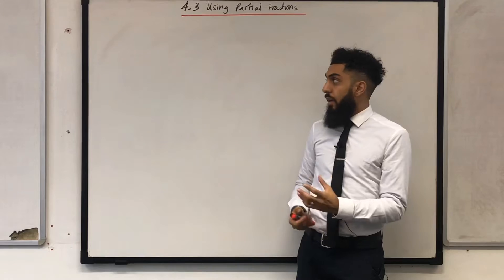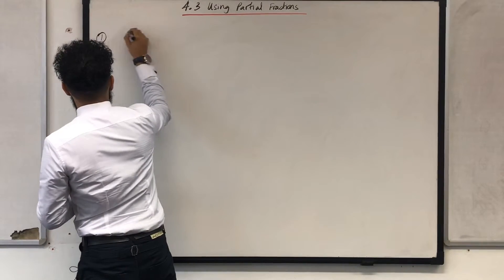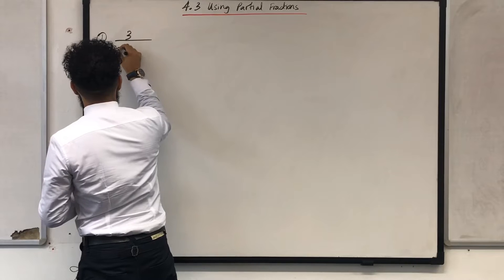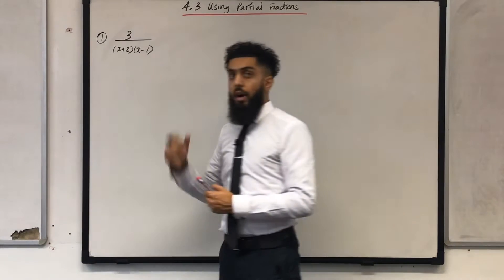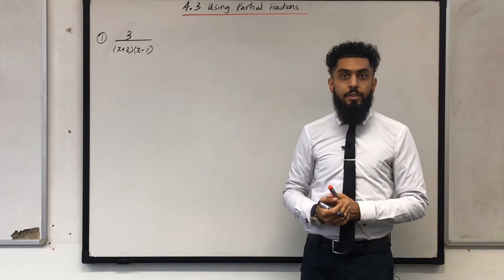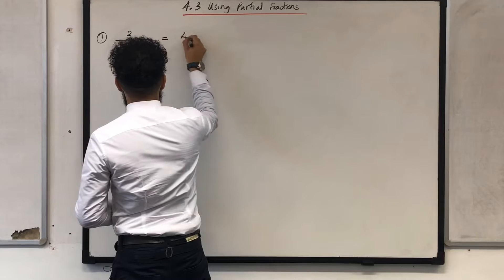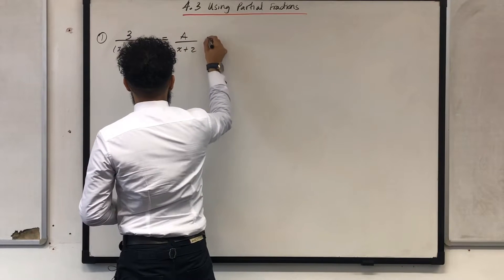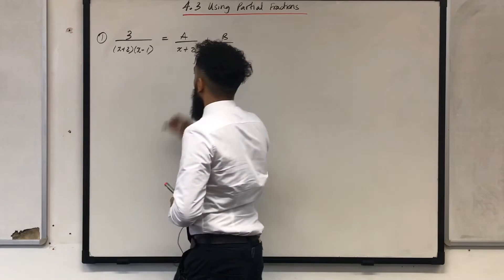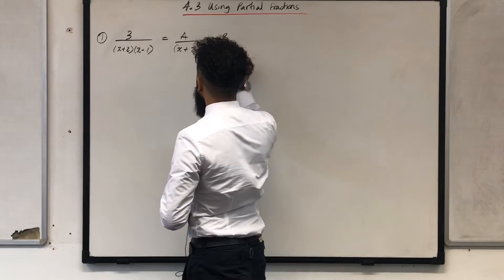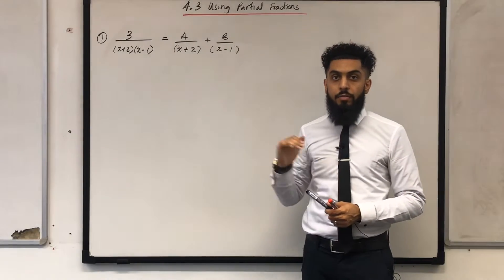The first one could be of the following form: 3 over bracket x plus 2 bracket x minus 1. You could be asked to split this into partial fractions. In this case you can let this particular fraction equal a over x plus 2 plus b over x minus 1. Once you've done that you can then use the method of substitution to work out the value of a and the value of b respectively.